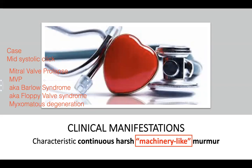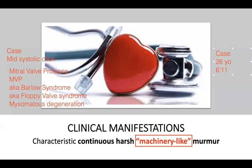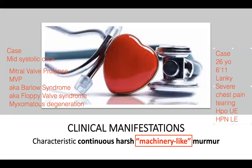Here is a clinical case for board exam practice. A 26-year-old lanky man standing 6'11" is brought in for severe tearing chest pain and hypotension in the upper extremities, with hypertension in the lower extremities. The working impression is aortic dissection, though coarctation of the aorta is a possibility given the blood pressure difference.